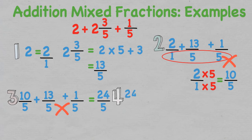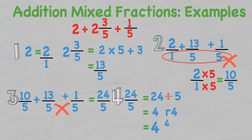We are able to simplify this back into a mixed fraction. To do this, we divide the numerator by the denominator: 24 divided by 5 is 4 with 4 left over. Therefore the final answer is 4 and 4 over 5.